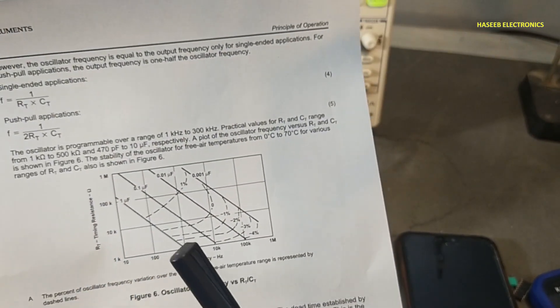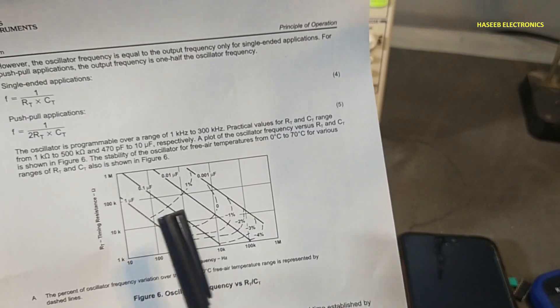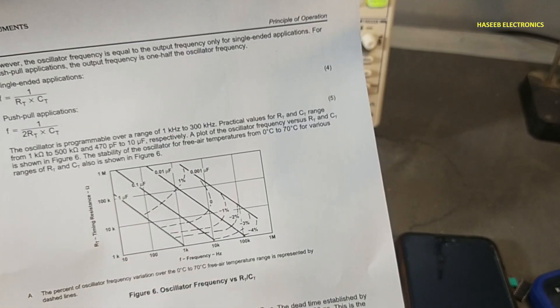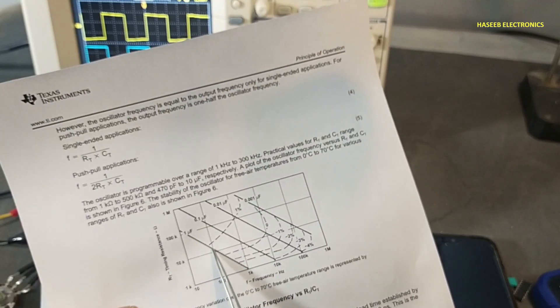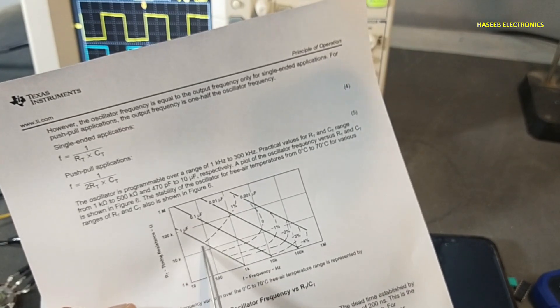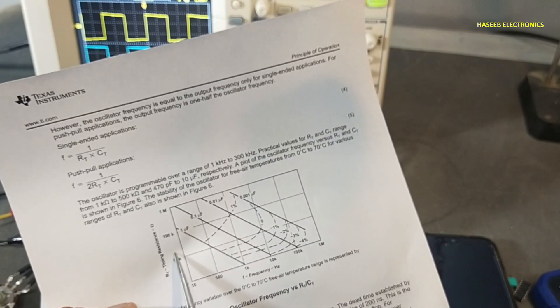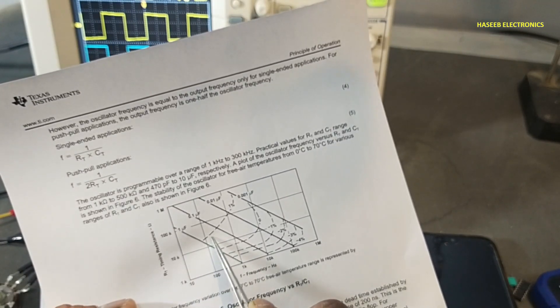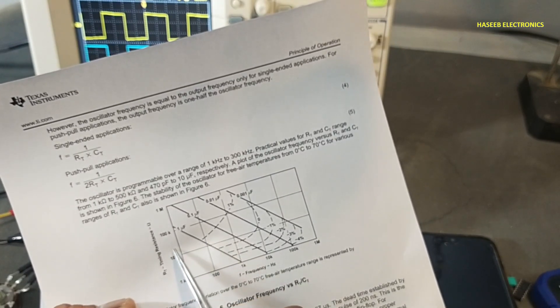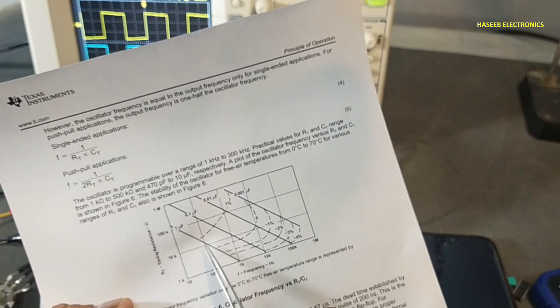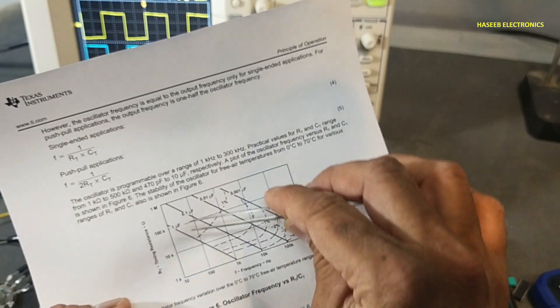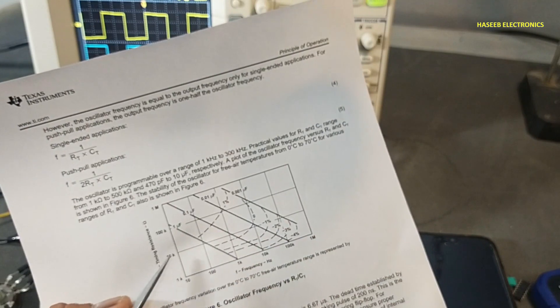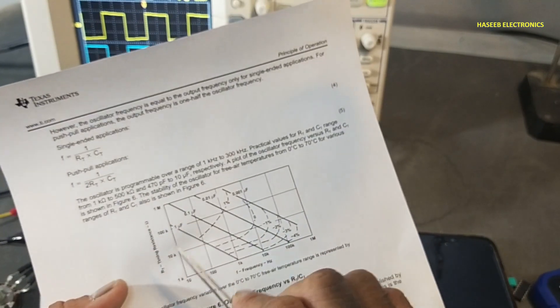First we need to select capacitor, the available size of the capacitor. For example, if I will use one microfarad capacitor, the resistor value around 10 to 11, 12 kilo ohms. If I will use some lower value capacitor, the resistor value will increase. When we will reduce the capacitor size, the resistor value will increase. There is a formula.